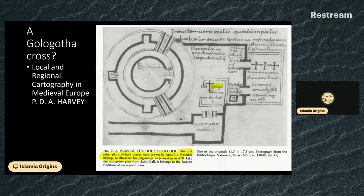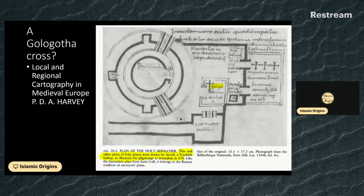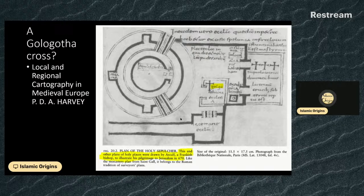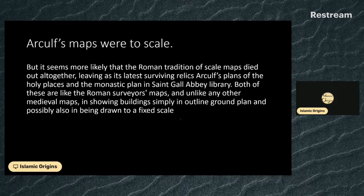If I read this correctly, that cross in the middle that I've highlighted in yellow — 'Colga' — I think that's a reference to Golgotha there. I'm not entirely familiar with the Holy Sepulcher church, though I've seen images of it. According to this paper, Arculf was able to make a plan to scale — this was an art the Romans were great at but which eventually died out. So at least that's somewhat helpful in terms of reliability.